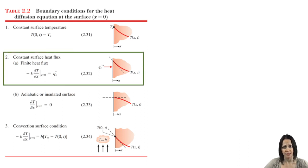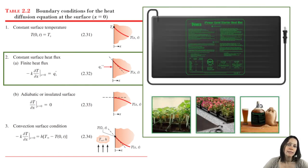Let's look at the next boundary condition in which you have a heat flux at the surface. The place where you would see this is with a seed starting mat. These are mats that provide a heat flux to seedlings to encourage germination.